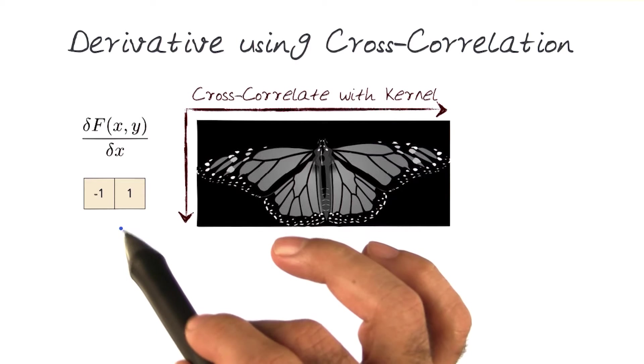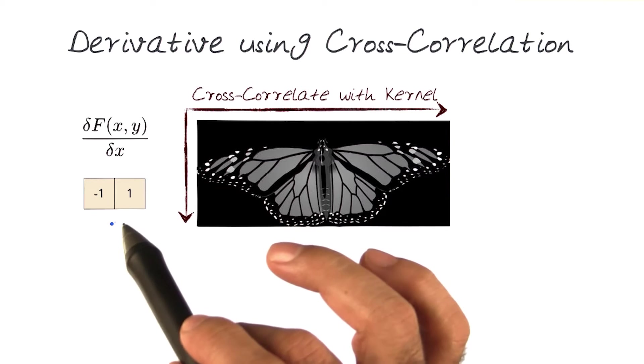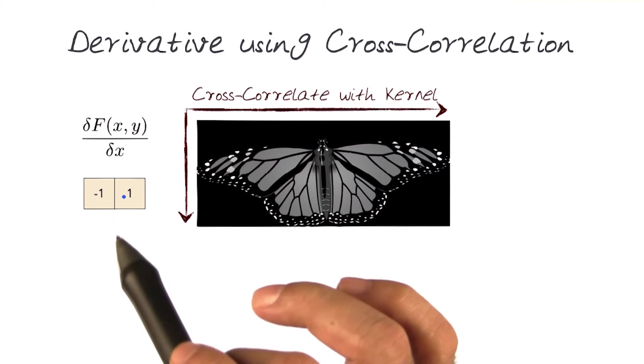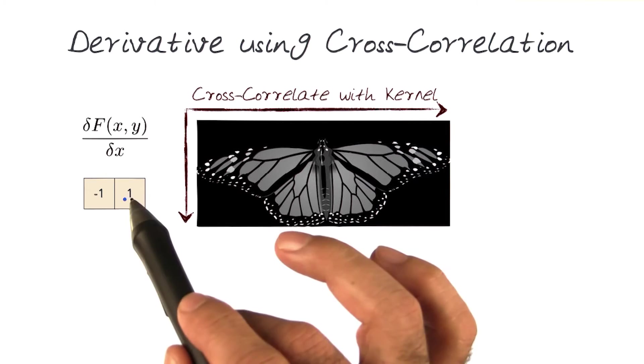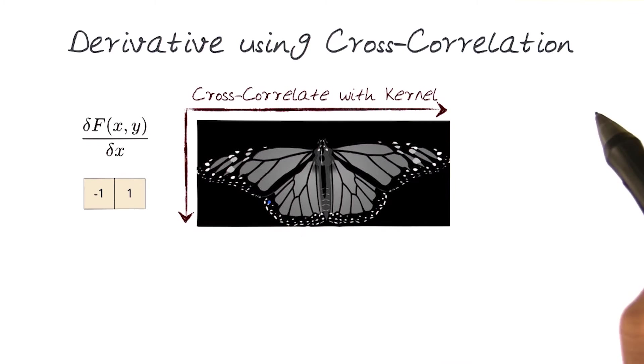how about I use this simple kernel like this? Where I take the negative value and the positive value, this is what we did in the last slide, and see if we do an inner dot product with each and every aspect of the image.